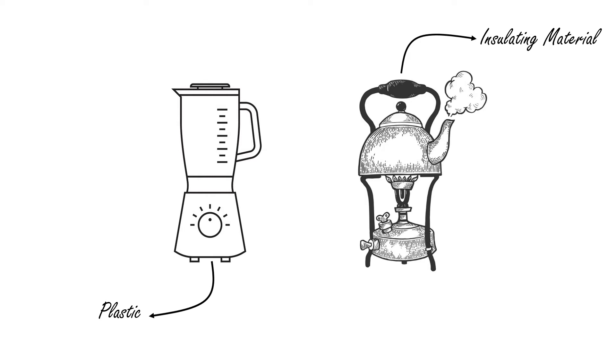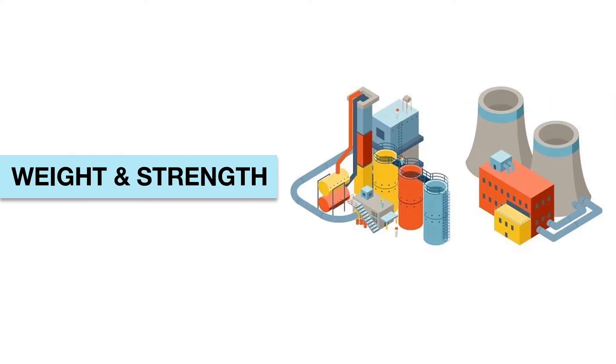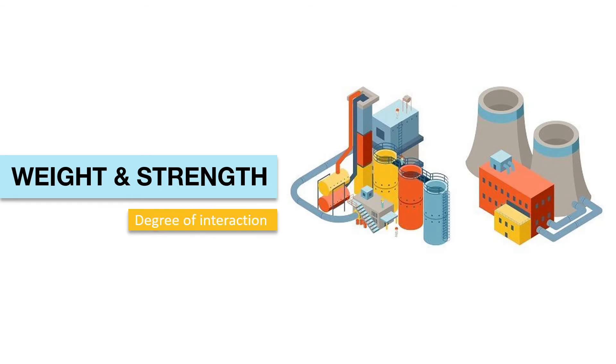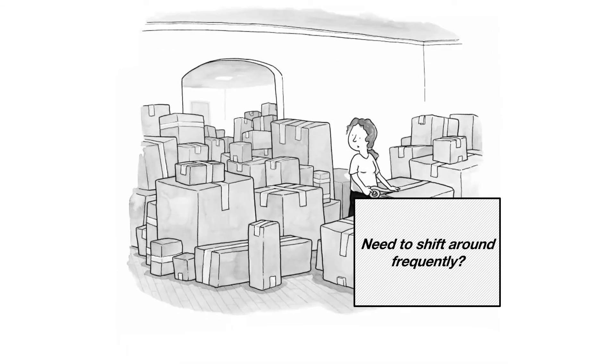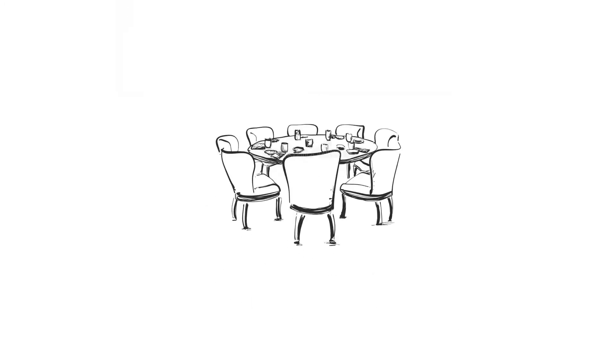Once we know the use, next we need to know the weight and strength needed for the product. This not only depends on the nature of use but also the degree of interaction with the user. If you are designing a product which a user needs to shift around frequently, the material should be lightweight, and vice versa. A dining table and a laptop table can both be considered furniture design, but we use different materials based on the interaction with the user.